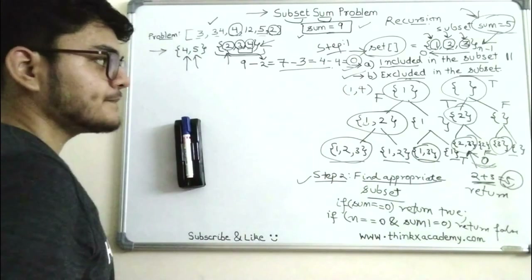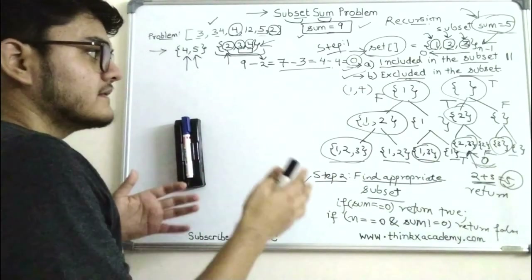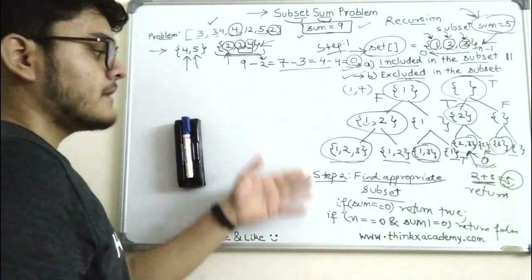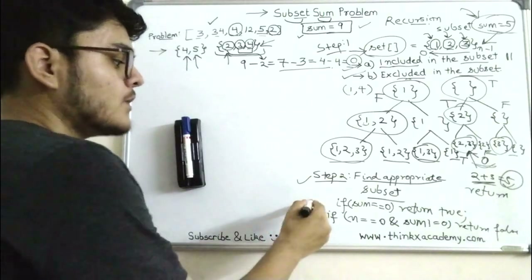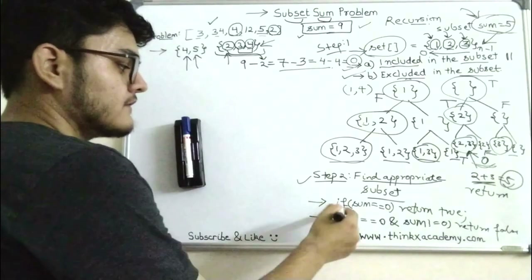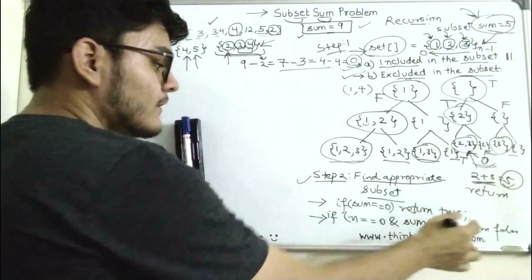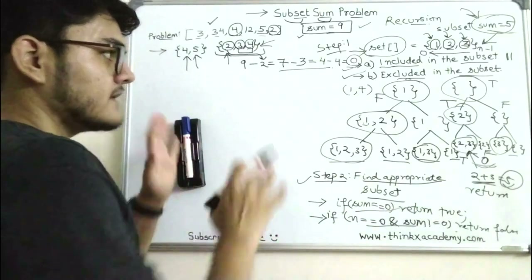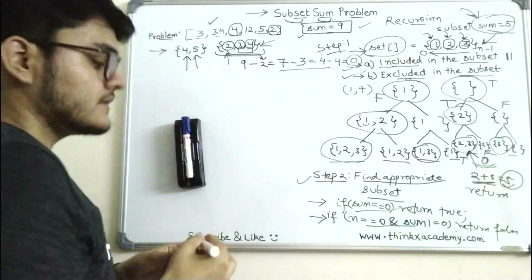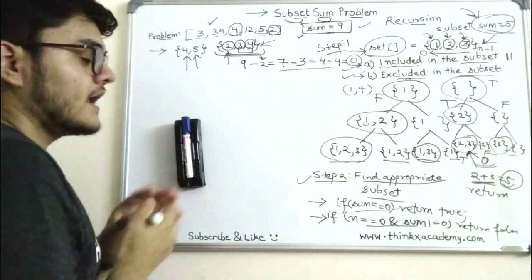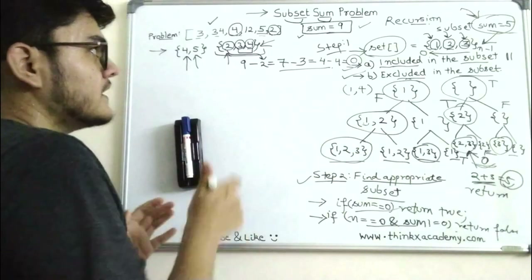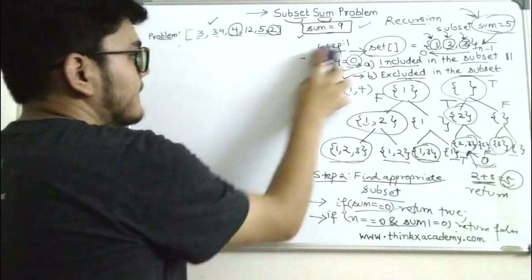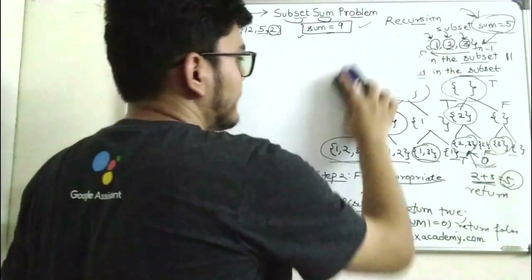This is the basic working behind the whole problem. We solve it using two steps: making two recursive calls for the two sub-problems, and checking the sum to determine when to return true or false. Now I am going to erase this and write the whole function in C++, then draw the recursion tree for this example.